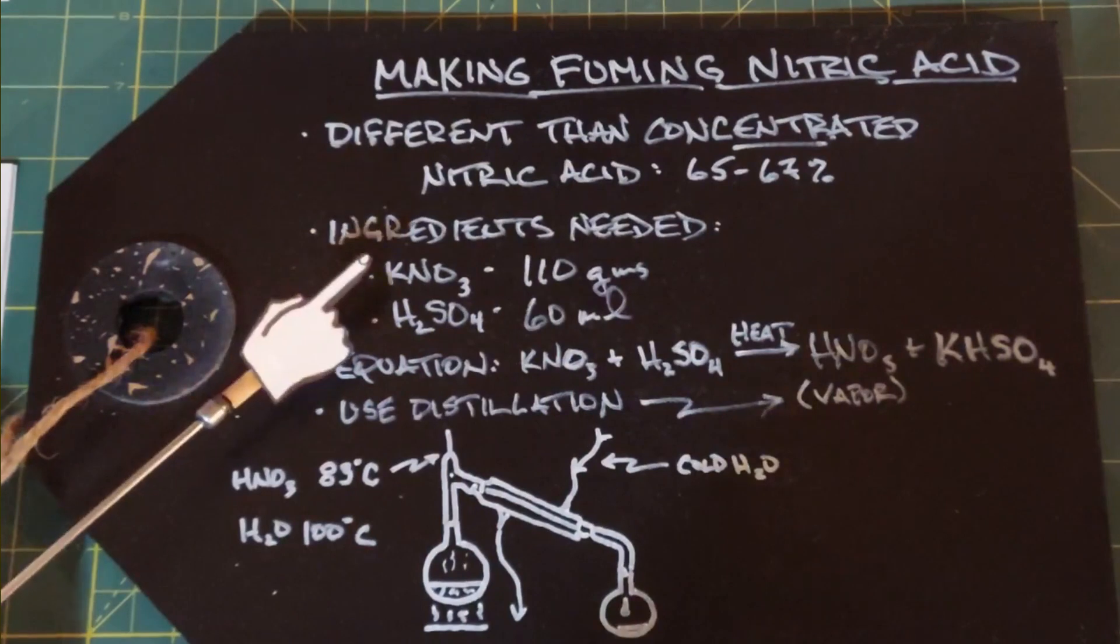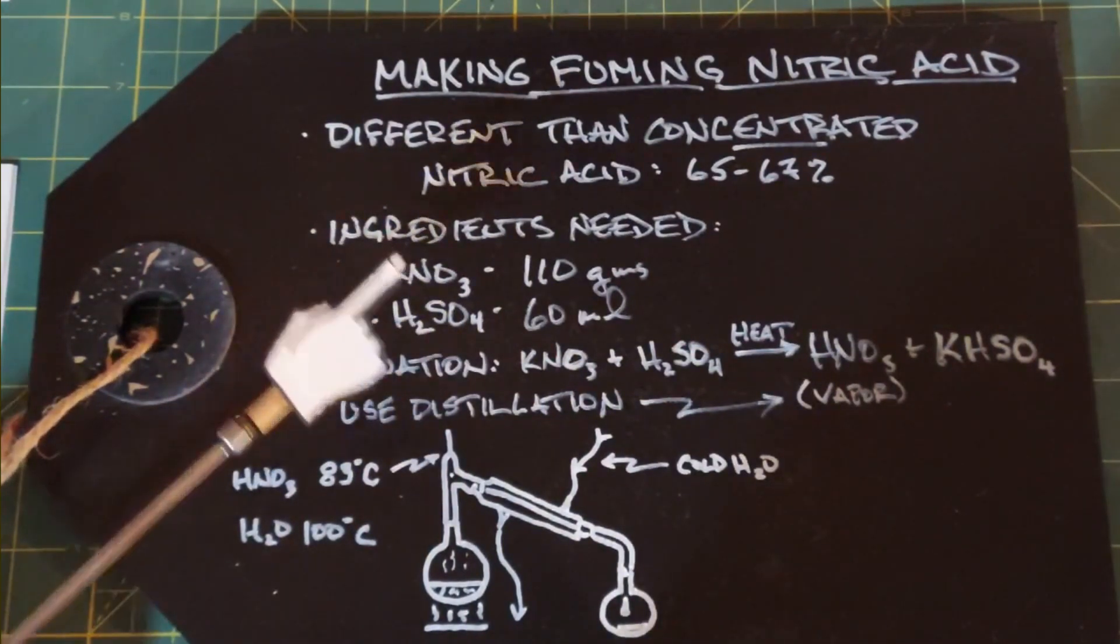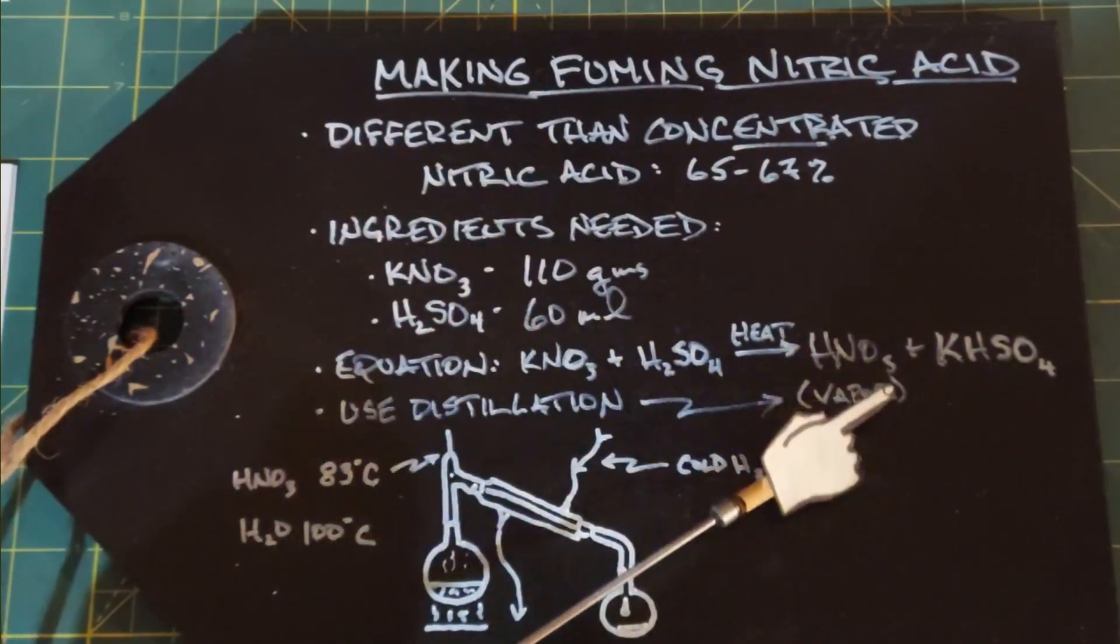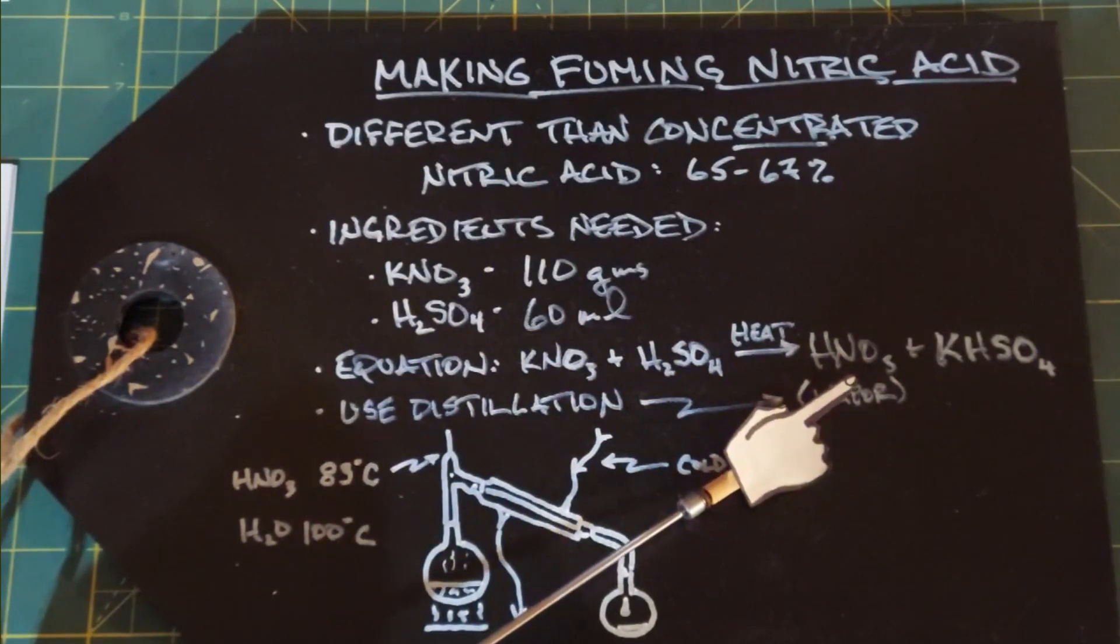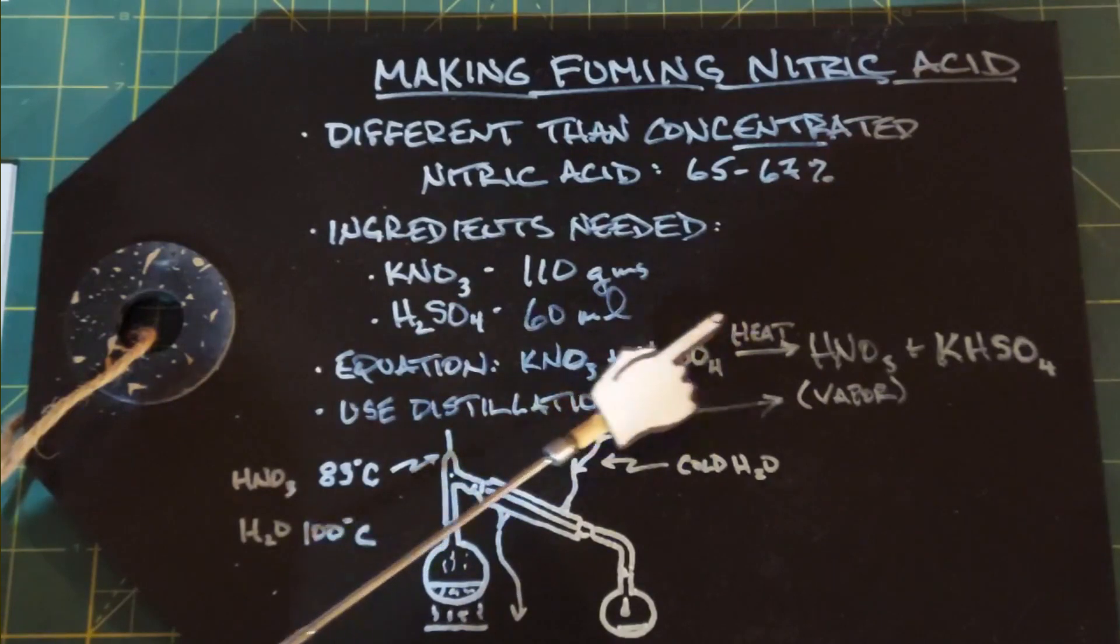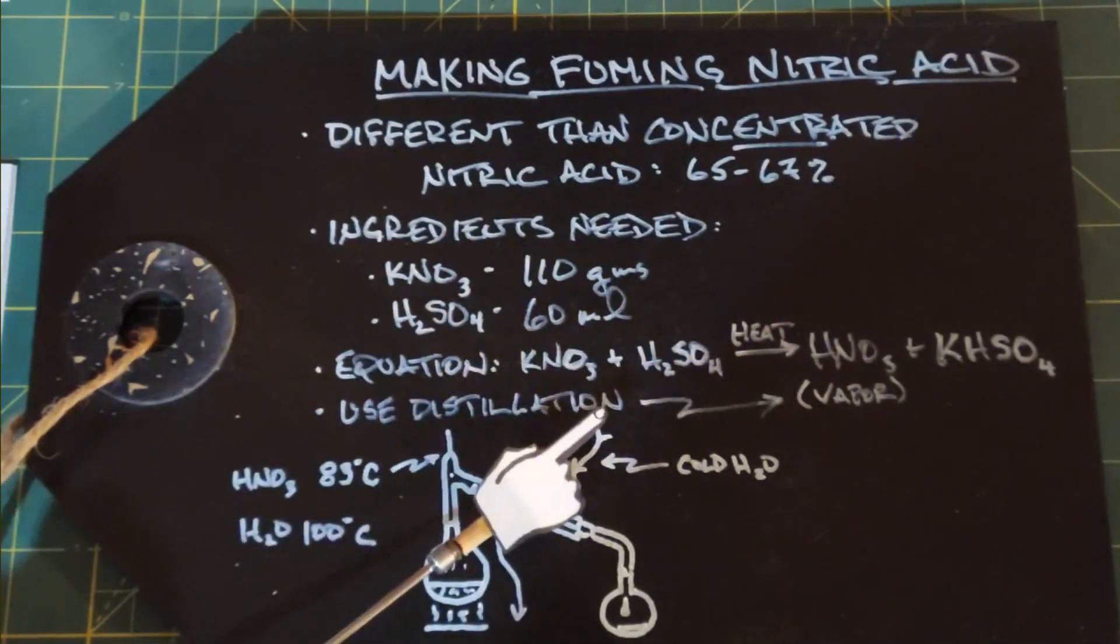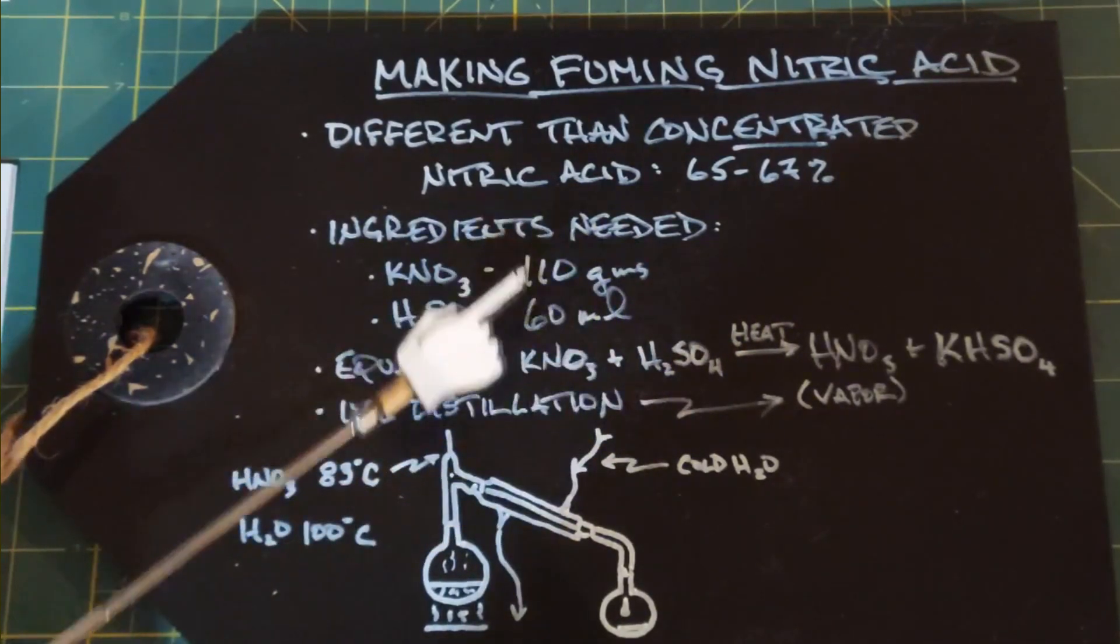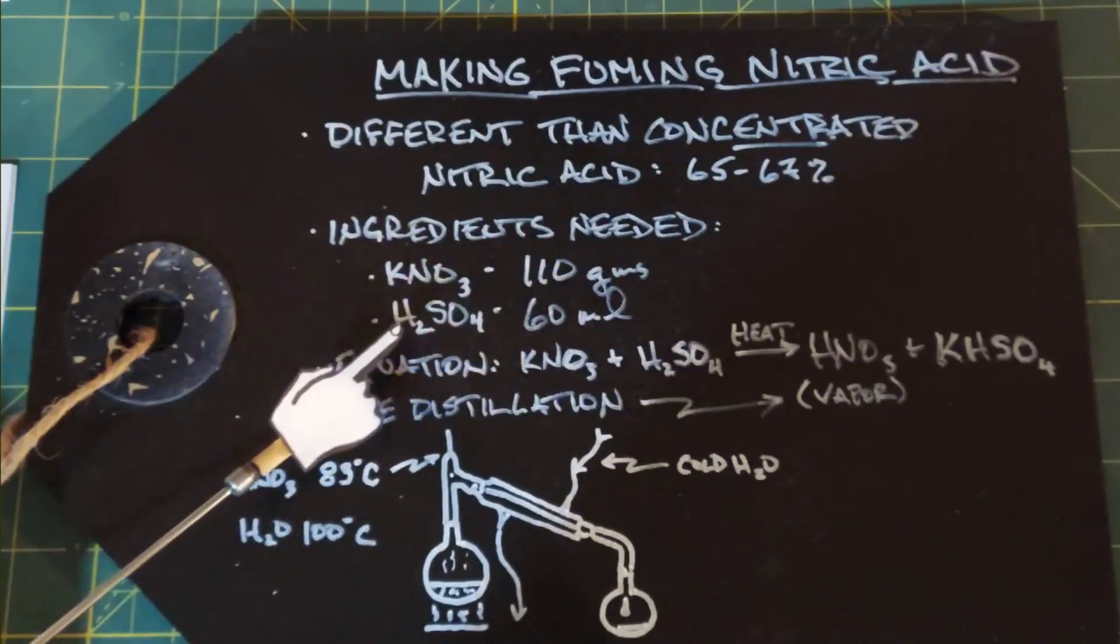In this reaction, when we mix these two ingredients, we end up with nitric acid—of course, that's what we're trying to do—and something called potassium bisulfate. Now it takes heat to do that, and you can do this through a distillation process.